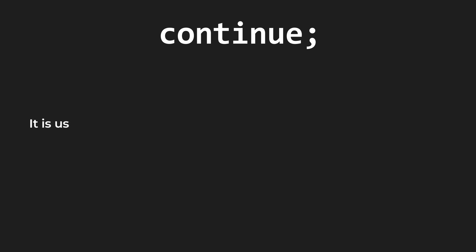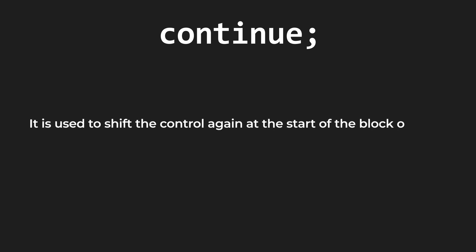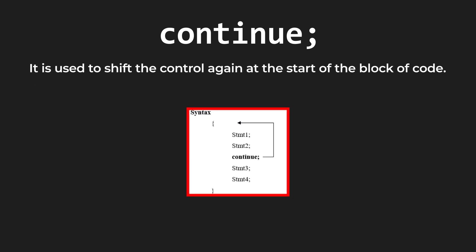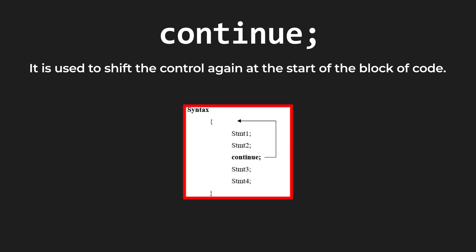That's how you use break statements. Next up we have the continue unconditional statement. Totally opposite to the break statement, the continue statement is used to shift the control back to the start of the block of code. Looking at the syntax, we have statement 1, 2, and then continue — every time continue is executed, the control is taken back to the start of the code, which means statements 3 and 4 are not executed.